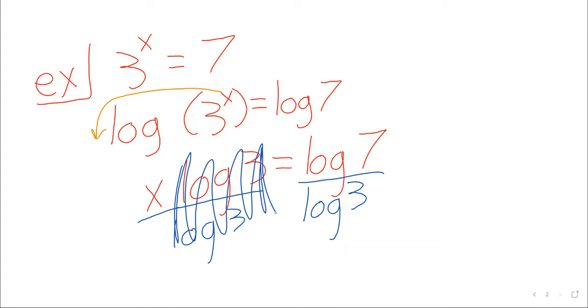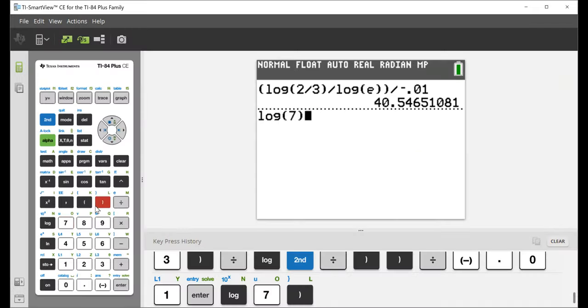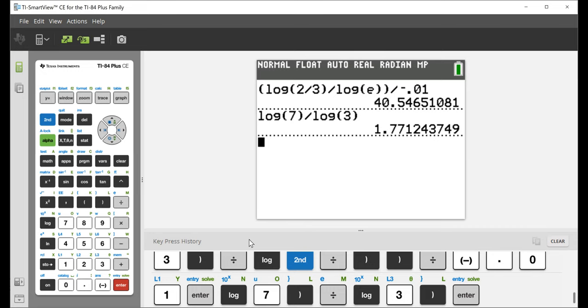x is the log of 7 over the log of 3. We can go to our calculator. Log 7 over log 3. If we want a decimal approximation, 1.7712.